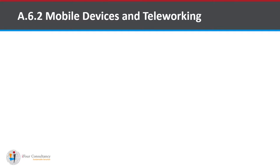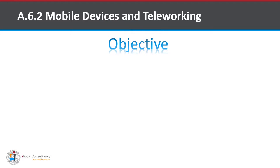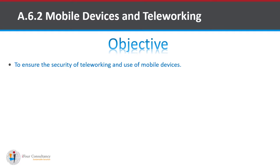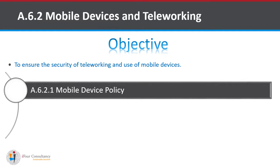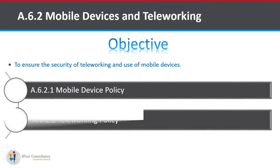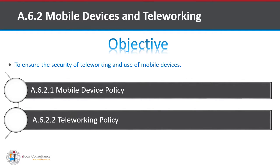The next part is A.6.2, that is mobile devices and teleworking, and their role in information security. The objective is to ensure the security of teleworking and use of mobile devices. It is divided into A.6.2.1, that is mobile device policy, and A.6.2.2, that is teleworking policy.